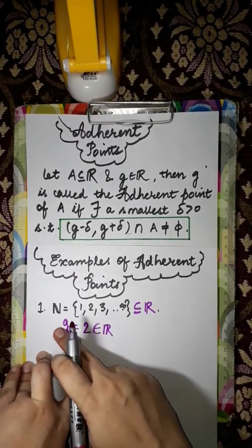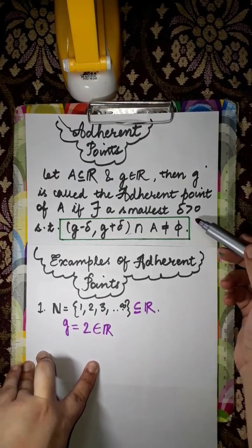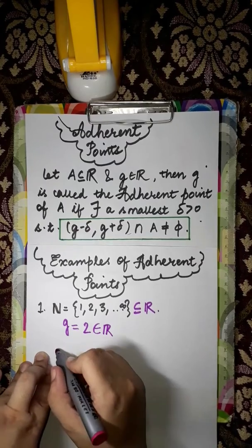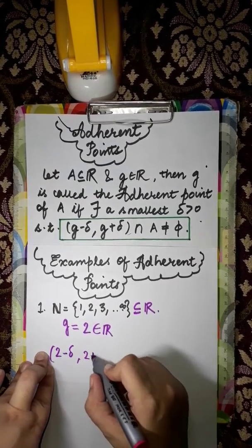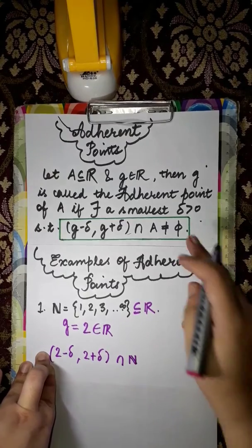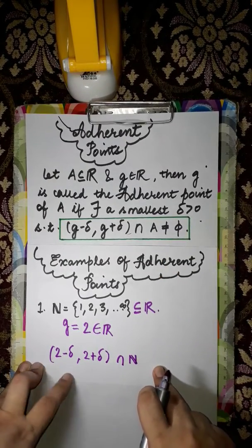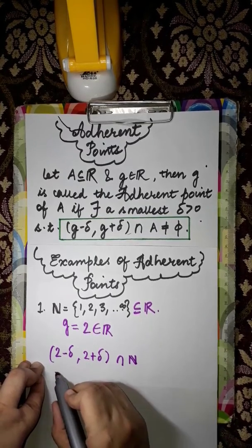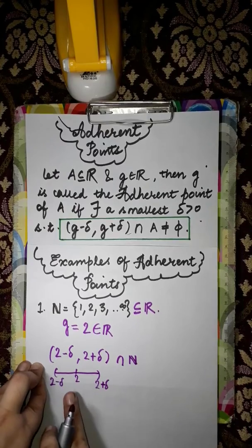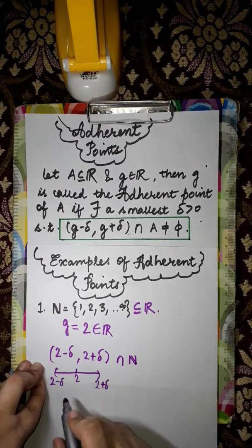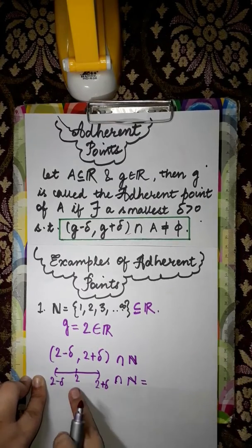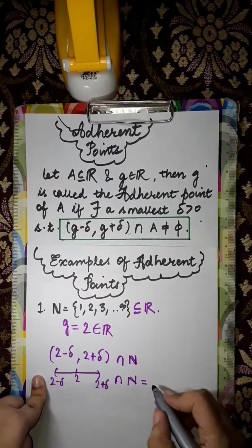Then 2 is known as an adherent point of the natural numbers if there exists a delta greater than 0 such that the open interval (2 − δ, 2 + δ) intersected with the natural numbers is non-empty. This open interval intersected with ℕ gives us {2}, which is clearly non-empty.